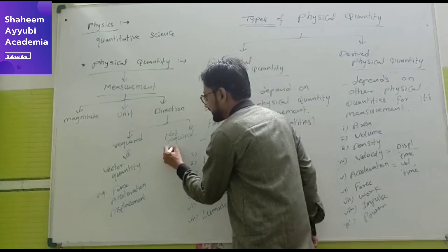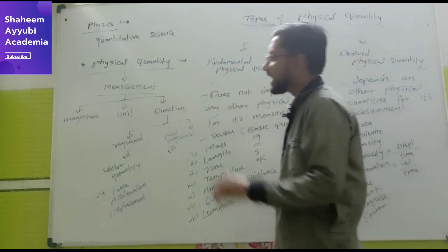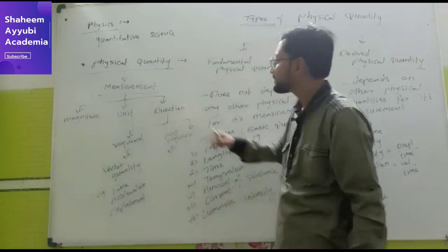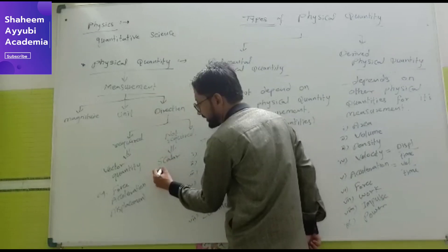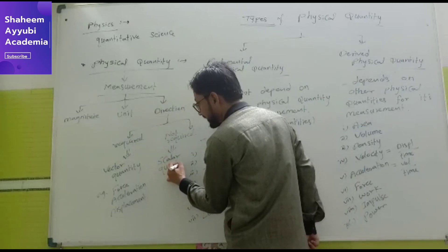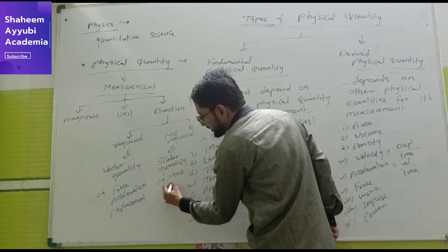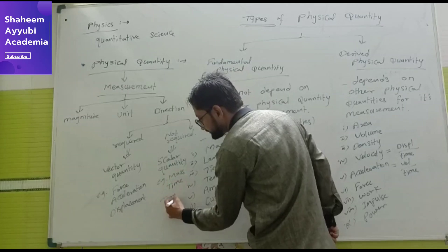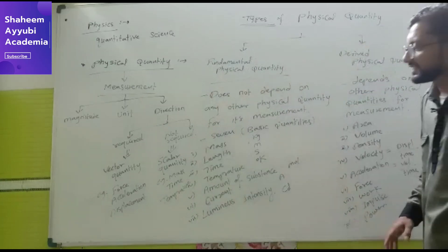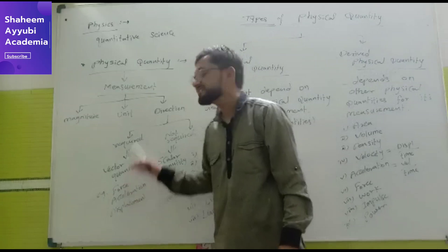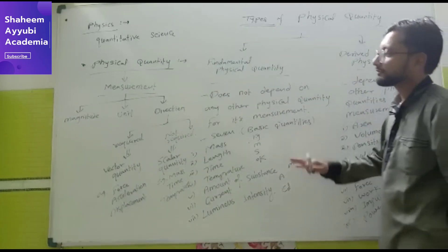A scalar physical quantity is a quantity which is completely measured by its magnitude only. A quantity which requires only magnitude for its complete measurement is called a scalar quantity. Examples of scalar quantities are mass, time, temperature, distance, and amount of substance — quantities in which we do not require any kind of direction.